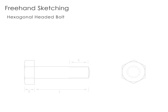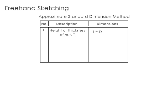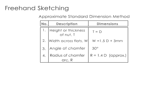To sketch this bolt, we shall use the approximate standard dimension method. The thickness of the nut T is equal to D. The width across the flat W is equal to 1.5T plus 3mm. The angle of chamfer is 30 degrees. And the radius of the chamfer arc R is equal to 1.4T.